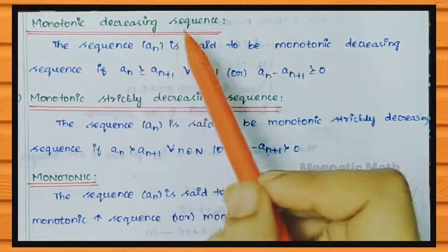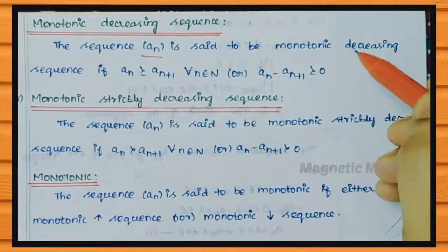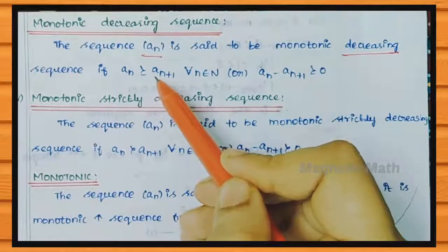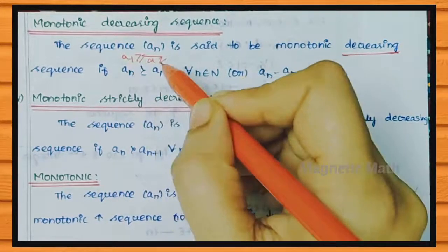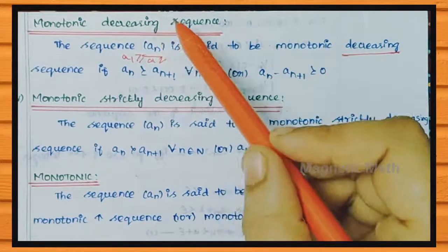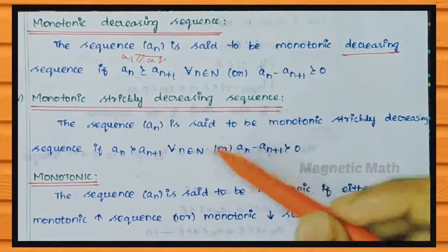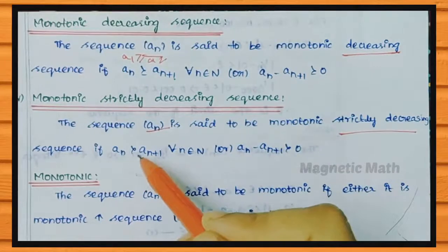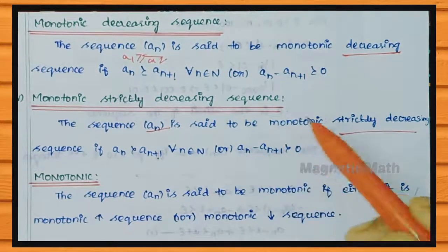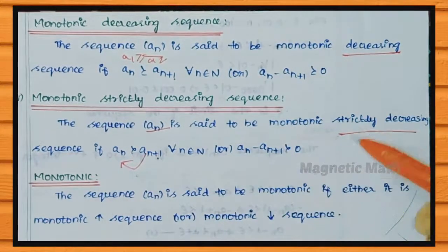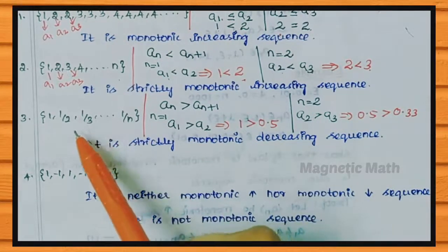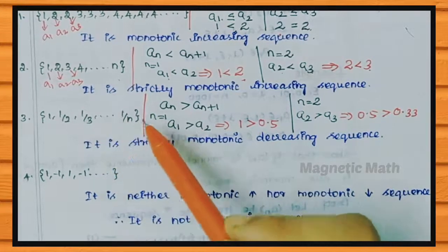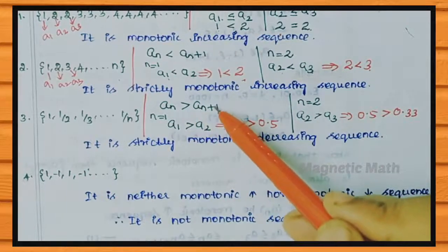Third: Monotonic Decreasing Sequence. A sequence An is said to be Monotonic Decreasing if An is greater than or equal to An plus 1, for all n. So for n=1, A1 ≥ A2 — the first term is greater than or equal to the second term. For Strictly Decreasing: An is greater than An plus 1 for all n, and An minus An plus 1 is greater than 0.